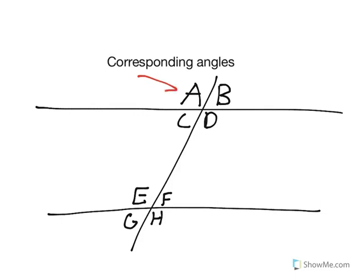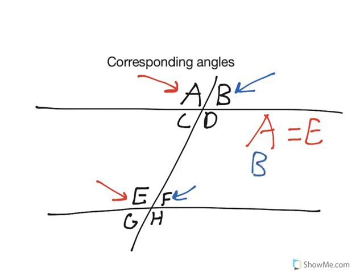Angles A and E, and B and F, are corresponding angles. This means that A and E are congruent, and B and F are also congruent. Angles A and G, and D and H, are also corresponding angles, therefore congruent.